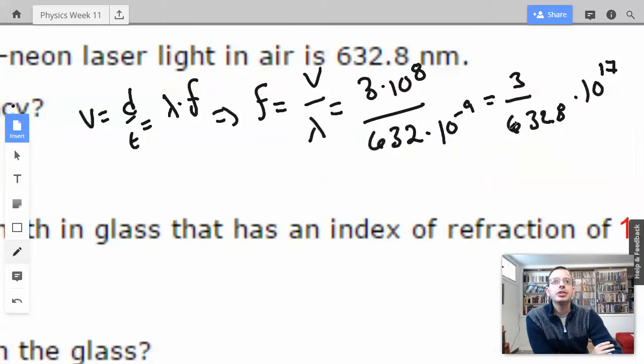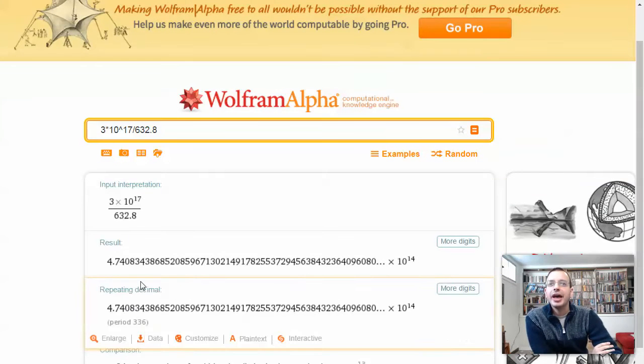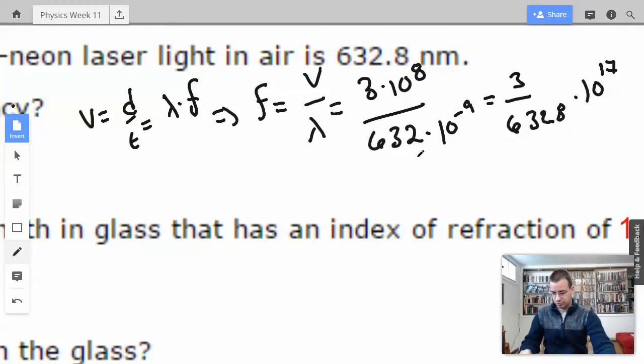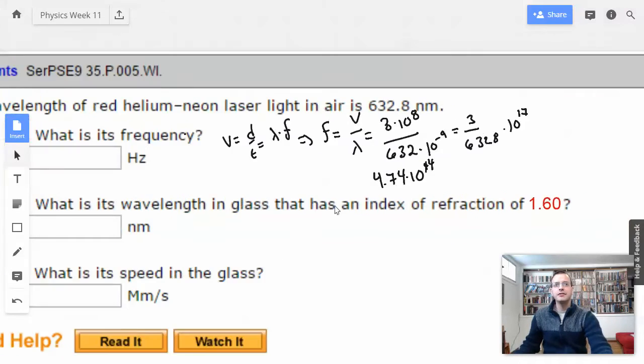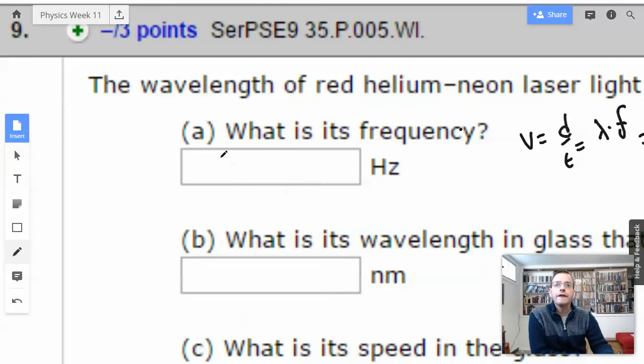3 times 10 to the 17th. I'm going to use Wolfram, and we have 4.74 times 10 to the 14th equals 4.74 times 10 to the 14th. And I think that's in the visible range, so that makes sense.